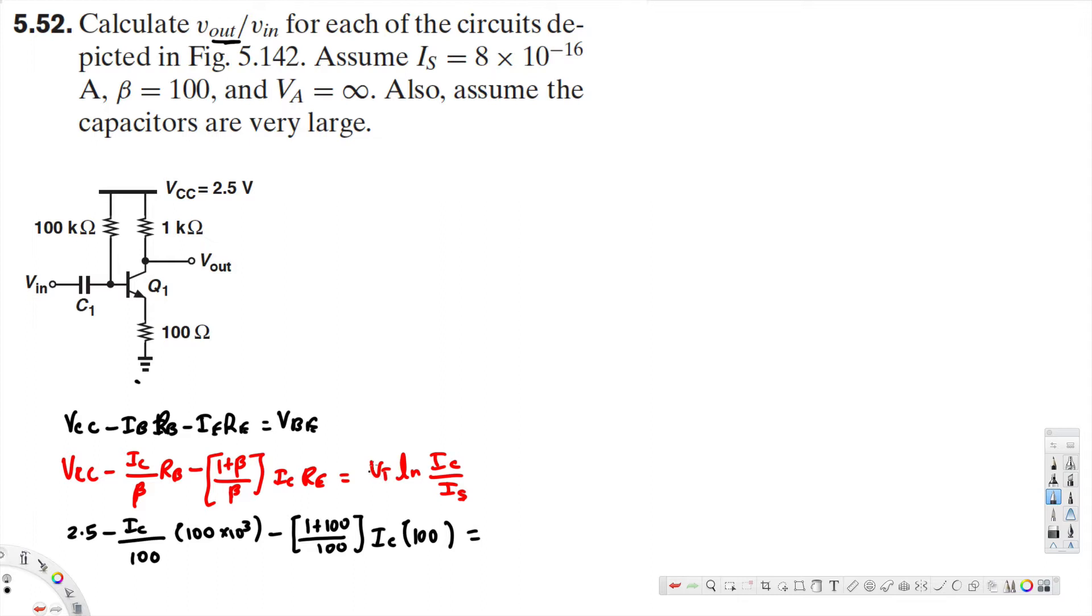That equals 26 millivolts, or we can write 26 times 10 to the minus 3, times natural log of I_C, which is what we're trying to find, over I_S, which is given as 8 times 10 to the minus 16.